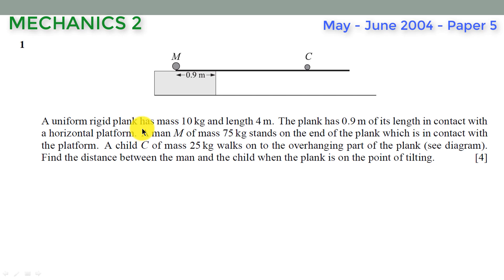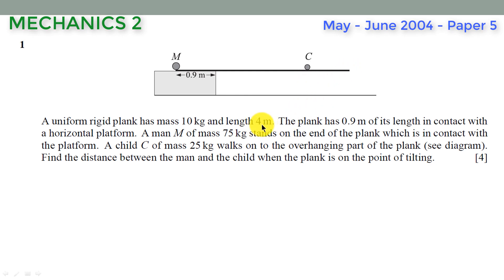The term 'uniform' is used here by the examiner to tell you that the center of mass of this plank is at the geometrical center. Since the plank has a length of 4 meters, we divide that length by 2 to get the point where the center of mass is located. The weight of the plank will act through this point.